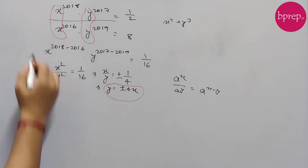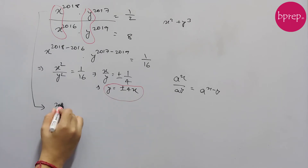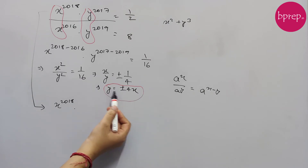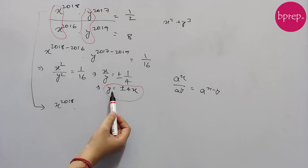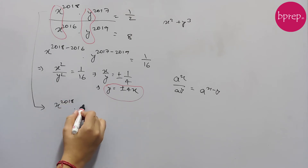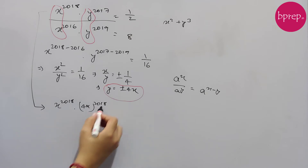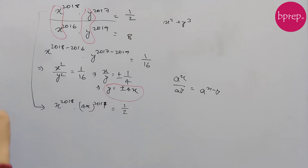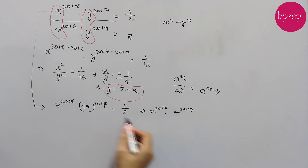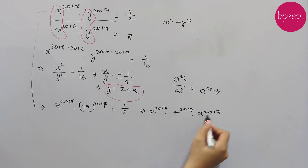Now that we have the relation, we can substitute it into one of the original equations. Let's put it into equation 1. First, we assume y equals positive 4x. Substituting into equation 1 gives x to the power 2018 times (4x) to the power 2017 equals 1/2. Expanding, this becomes x to the power 2018 times 4 to the power 2017 times x to the power 2017 equals 1/2.